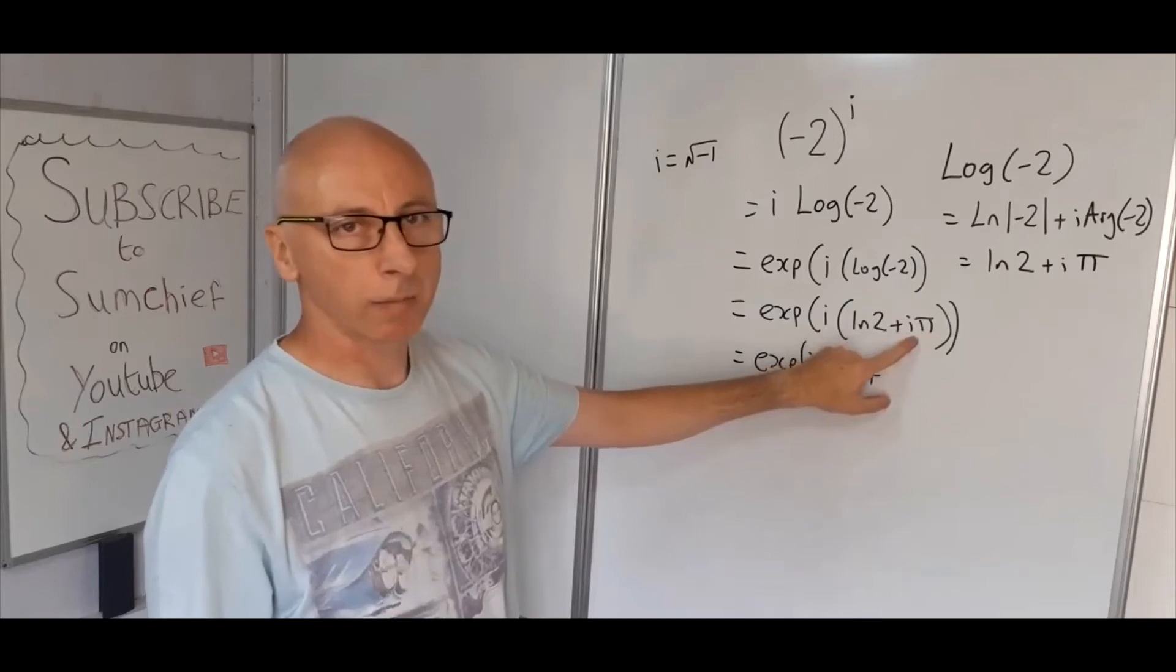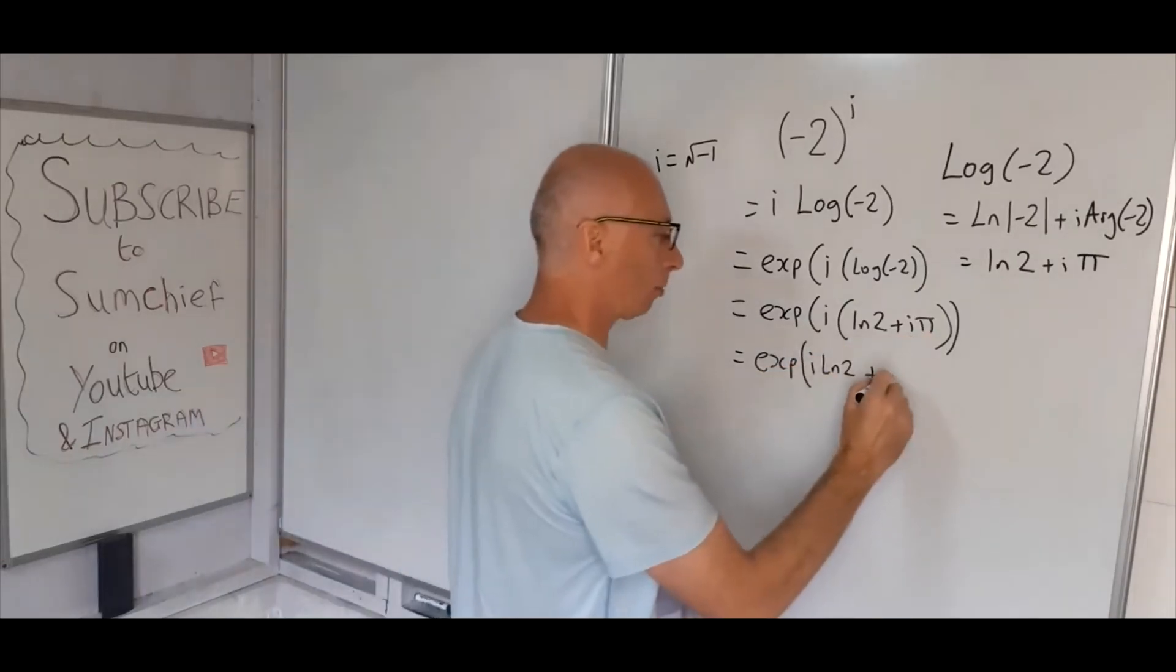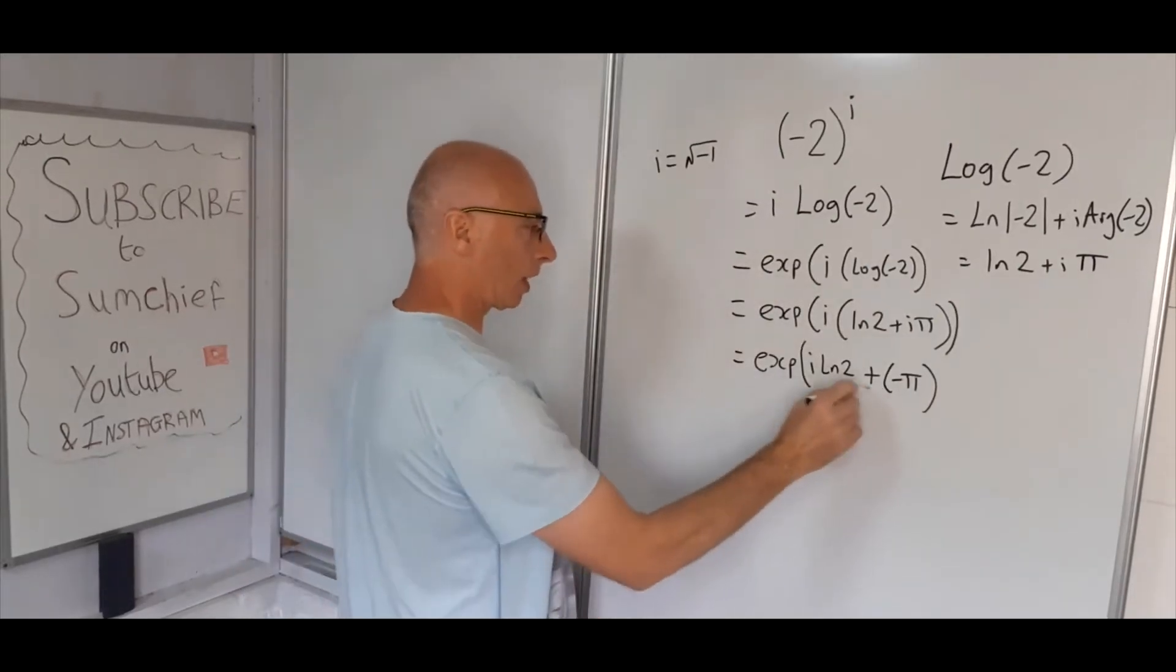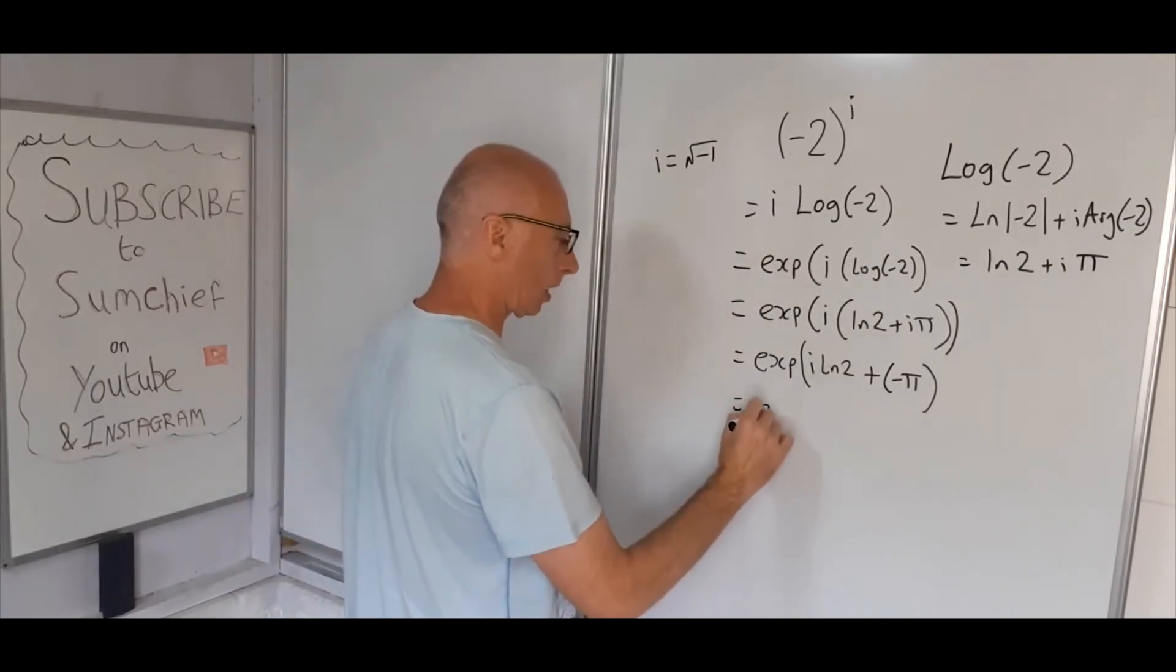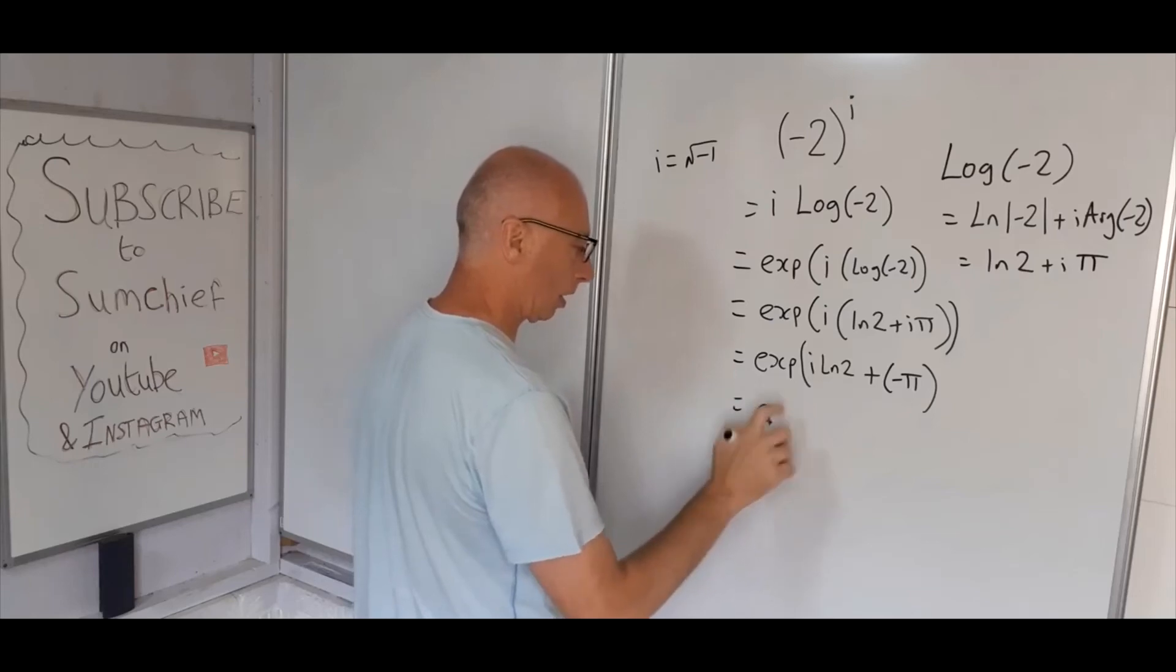So i square is minus one, so that becomes minus pi. So now what we can say is we've got exponential minus pi, that's the real value, plus i log of two, that's the complex value.